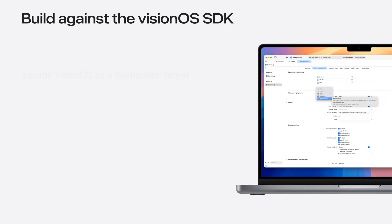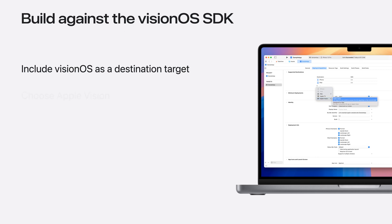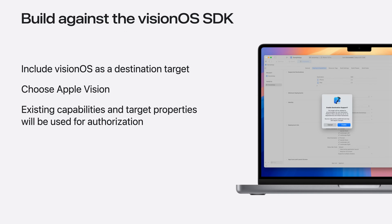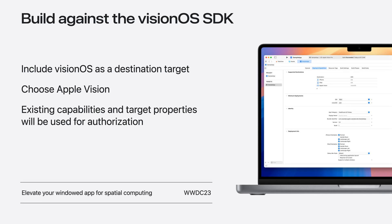First, I'll add Vision OS as a destination to our app target, which will enable running our app on the platform. Choosing Designed for iPad will get you the experience that Zach demoed. For today, I'll choose Apple Vision to fully utilize the Vision OS SDK. Our app will use the same HealthKit data authorization configurations as iPadOS — it just works. For more information on bringing your existing apps to Vision OS, check out the session Elevate Your Windowed App for Spatial Computing.